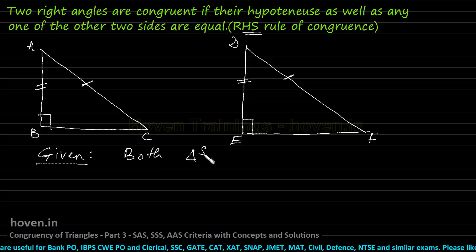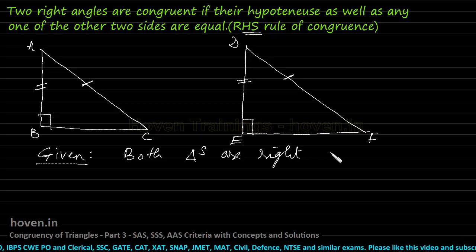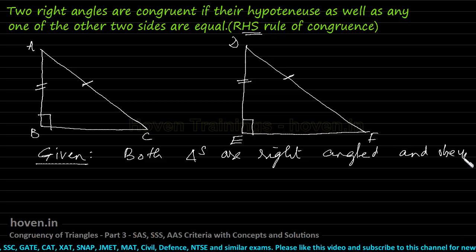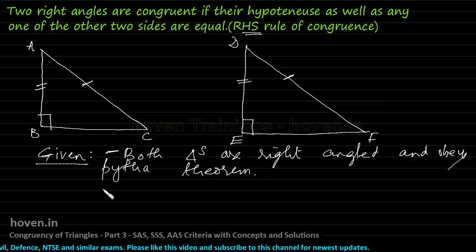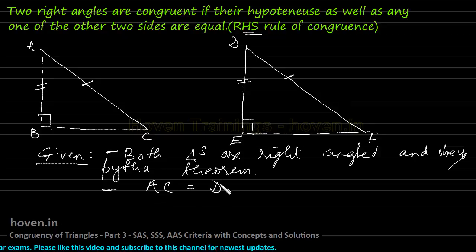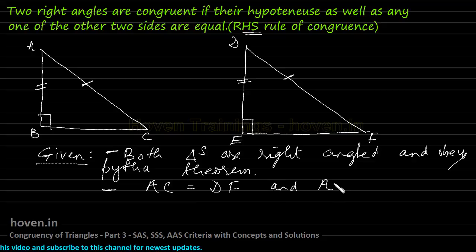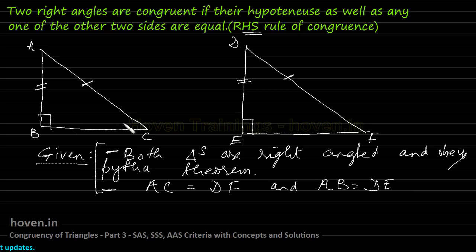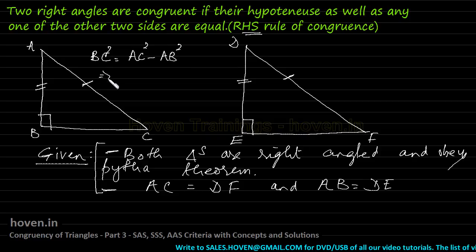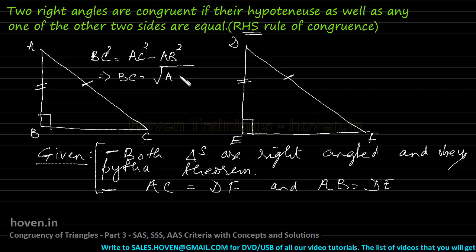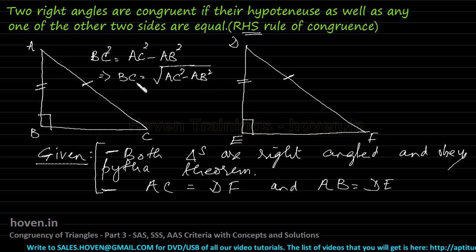Let us list what is given to us. Both triangles are right-angled and obey the Pythagoras theorem. AC equals DF, and AB equals DE. We have to prove the triangles are congruent. Since this triangle is a right triangle, it obeys Pythagoras theorem. Therefore BC equals the square root of AC squared minus AB squared.